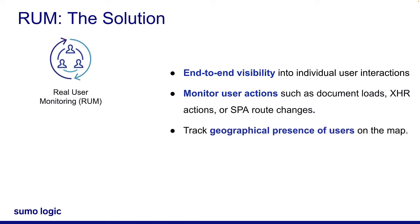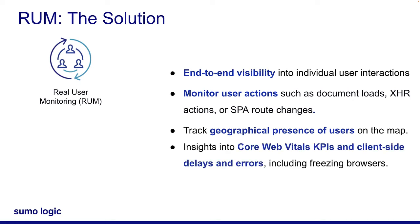You can break down performance of your users by geographical location, operating system, or browser type. RUM's JavaScript library also allows insights into Core Web Vitals KPIs, and client-side errors, including unhandled exceptions and rejections, as well as browser freeze delays.